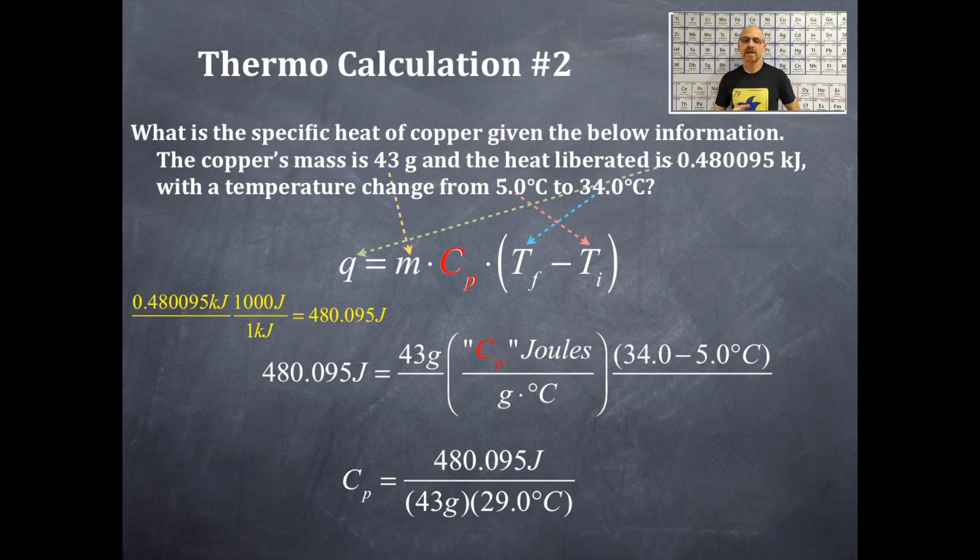We're going to rearrange this and solve for the specific heat capacity. That is dividing both sides by the mass and the delta T. That's the change in temperature. So I've done that for you right here. I've got my 480.095 joules in the numerator. My mass in the denominator at 43 grams. And then my delta T, that's the change in temperature at 29.0 degrees Celsius also in the denominator.